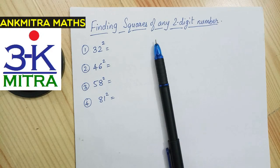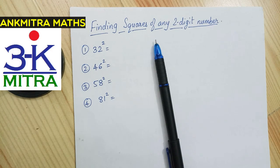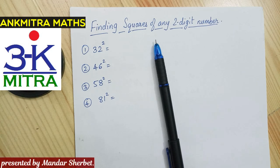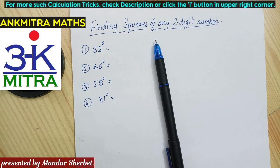Hello everyone. In this video I'll be explaining a calculation trick to find squares of any two-digit number in minimum possible time — it could be any two-digit number, no conditions applied. I've already explained the trick for finding squares of any number ending with zero or five, so I'll be excluding those numbers here, as that method is much easier and faster. Here I'll be focusing on numbers ending with any digit other than zero and five. I've already written down four examples on the paper, so let's get down to understanding this trick.